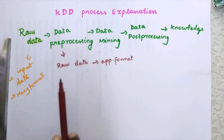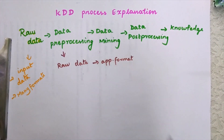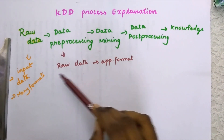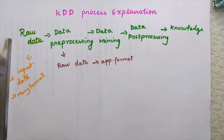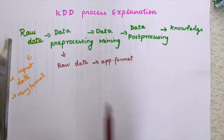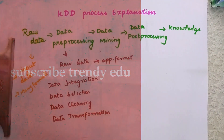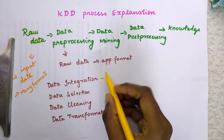In data preprocessing, we convert the raw data into an appropriate format of data. There are four major steps in data preprocessing to perform this conversion.